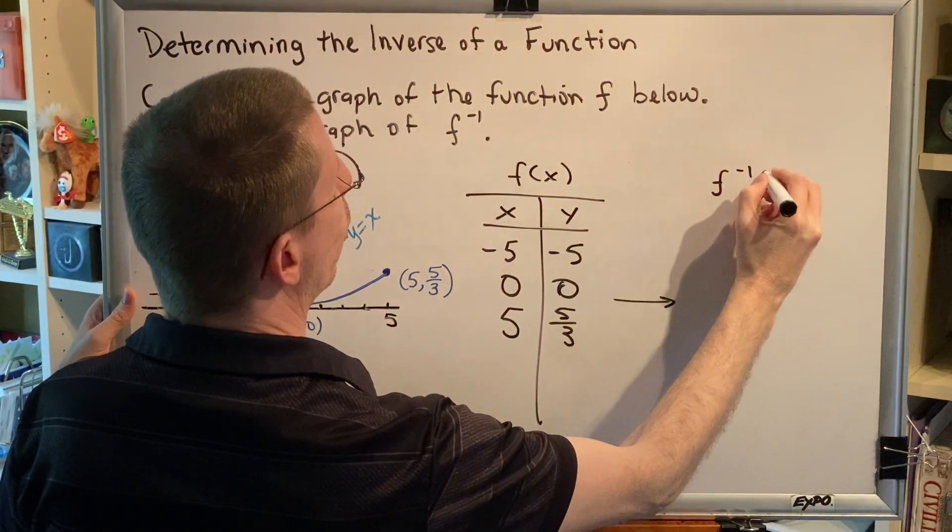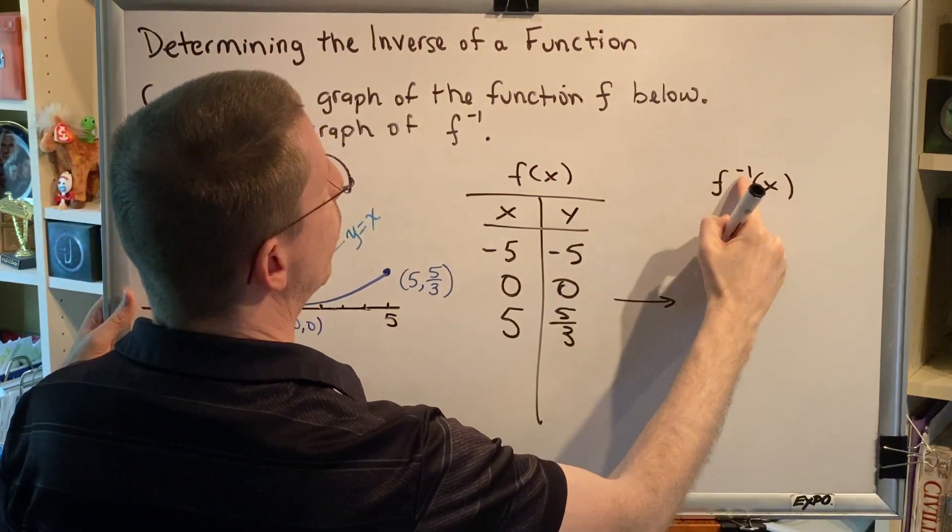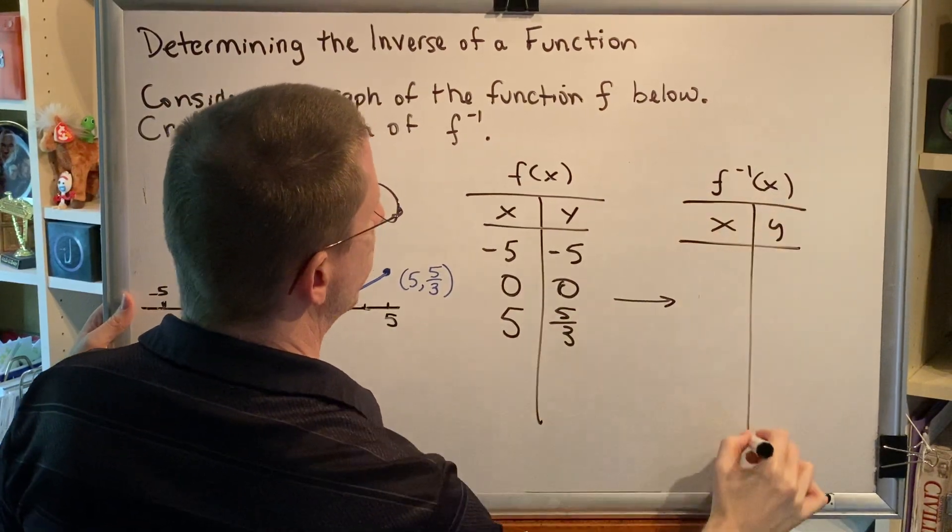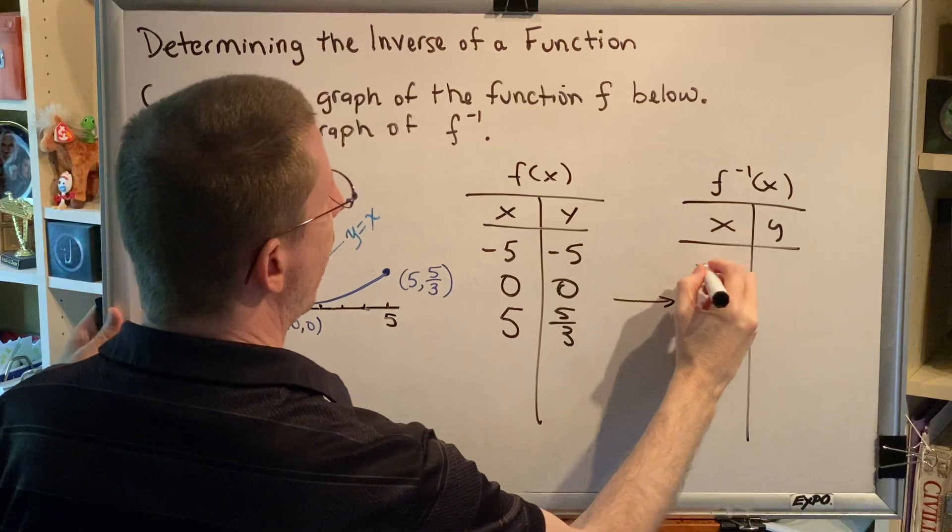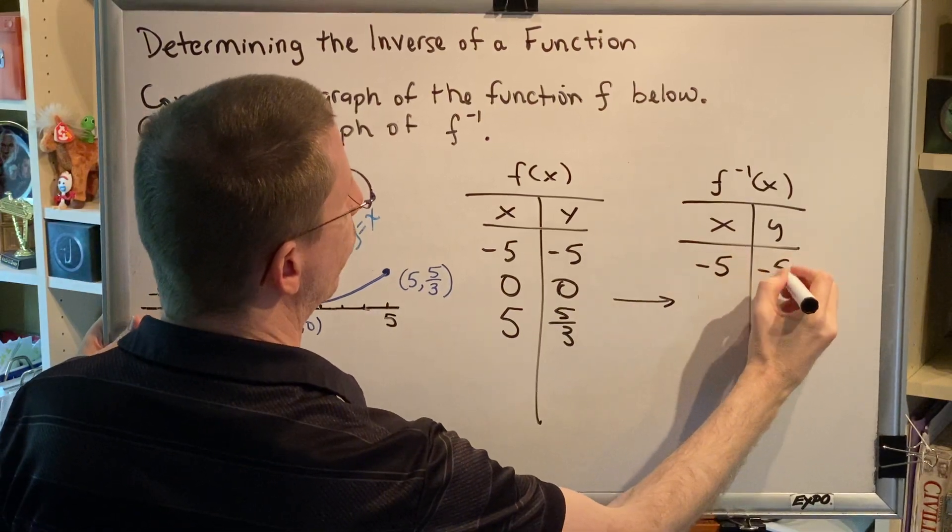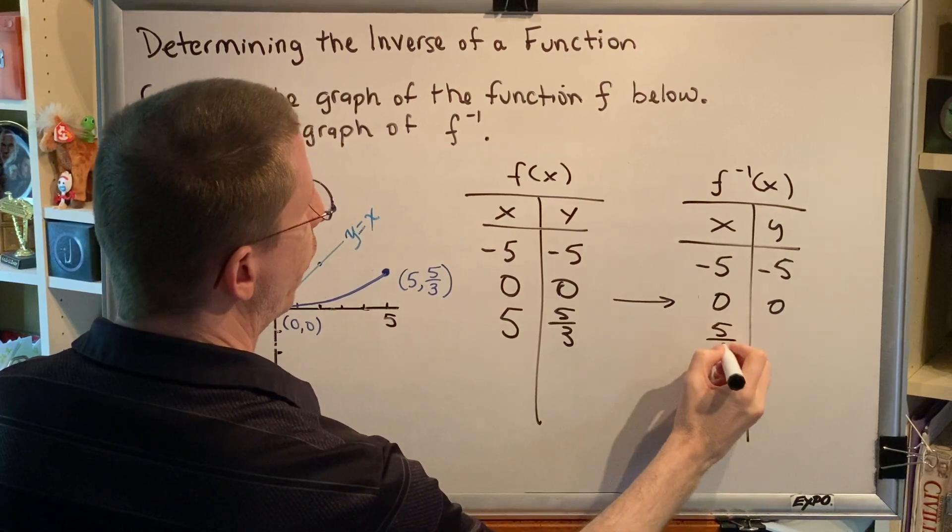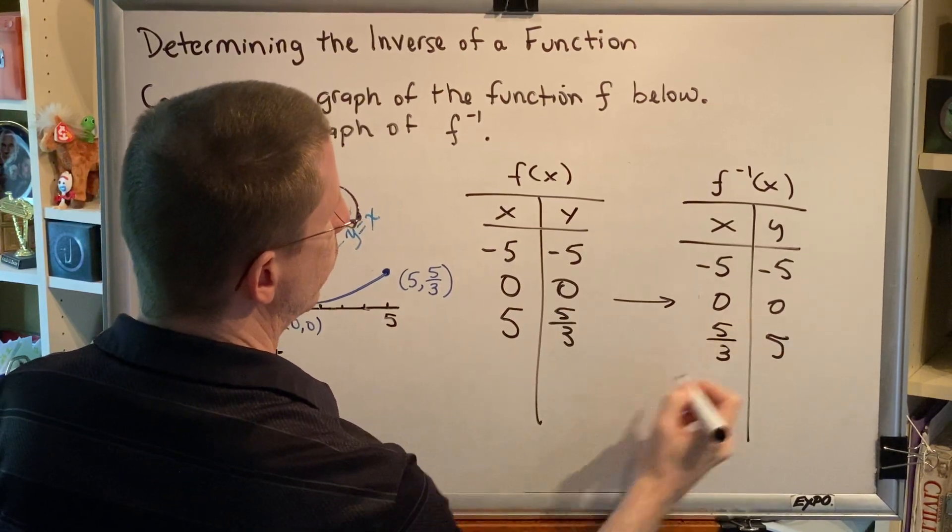Let's go ahead and create the ordered pairs on f inverse of x. By swapping all the x's and the y's, negative 5, negative 5 becomes negative 5, negative 5, 0, 0 becomes 0, 0, and 5, 5 thirds becomes 5 thirds, 5.